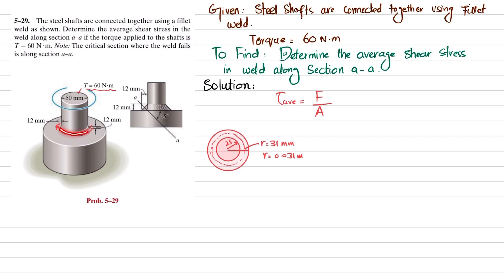The mean radius will be from this point to this point. This outer radius will be equal to 25 plus 12, which equals 37 millimeters, or 0.037 meters. So 0.031 and 0.037 — this is the mean radius where the force is applied due to this torque.